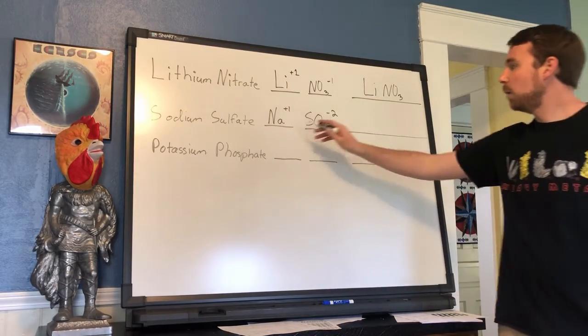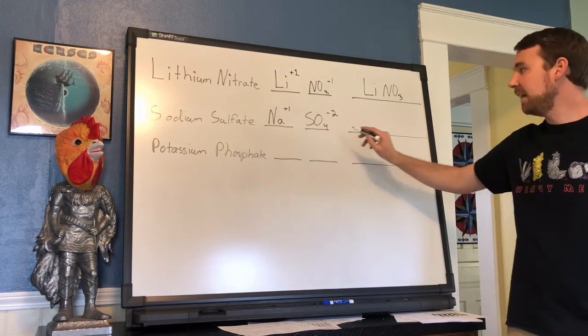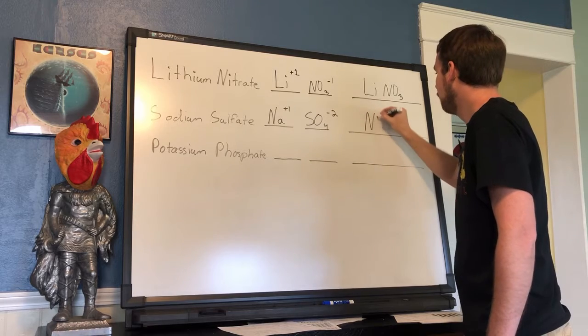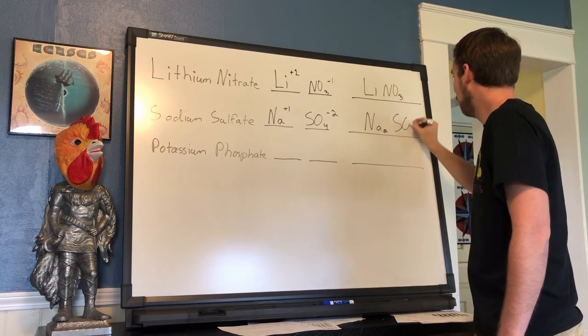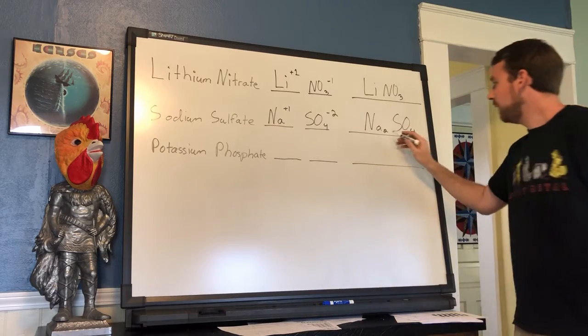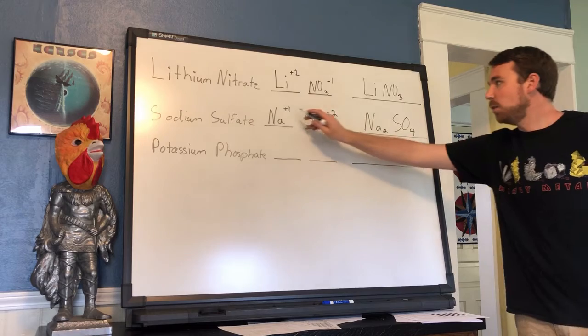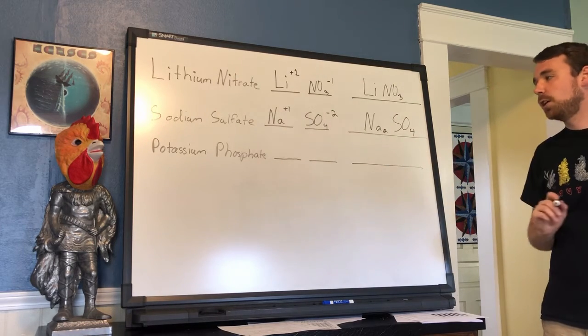When we go and put together our positive cation and our negative anion, that is going to give us the formula Na2SO4. We need to have a two with the sodium because sodium has a plus one charge and the sulfate has a minus two charge.